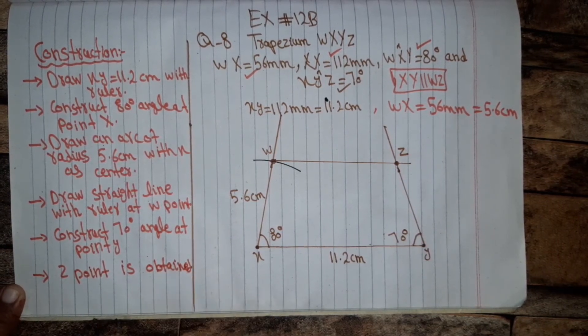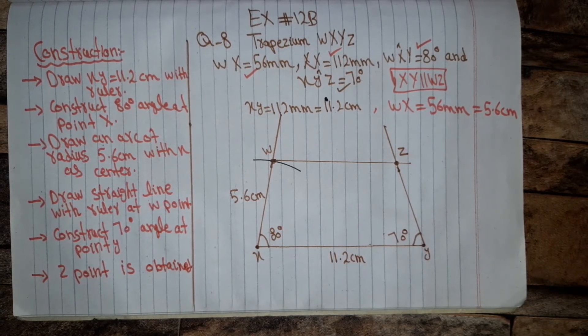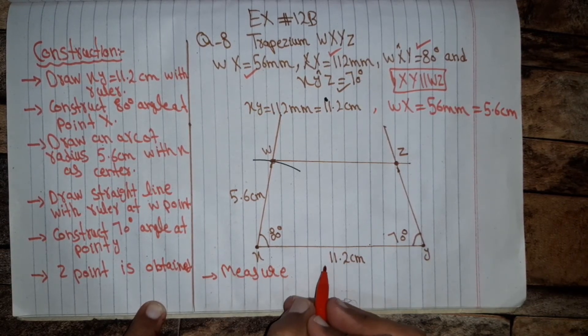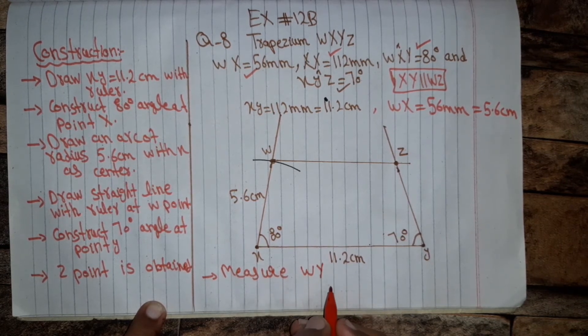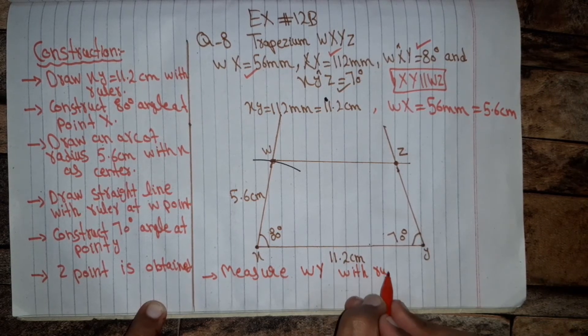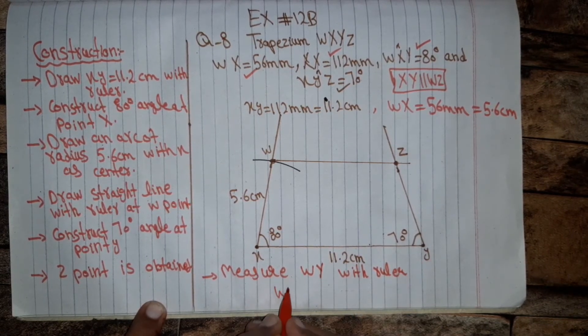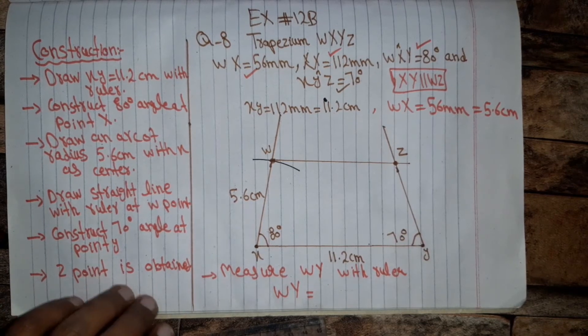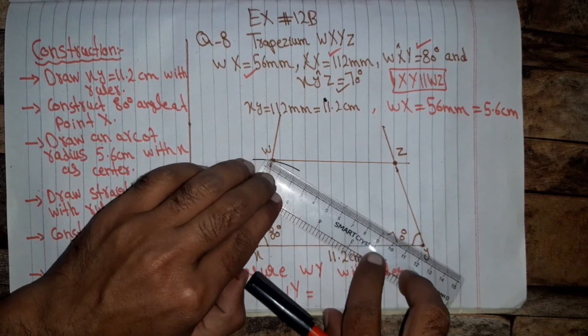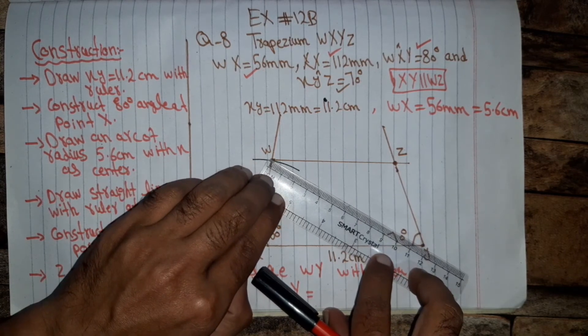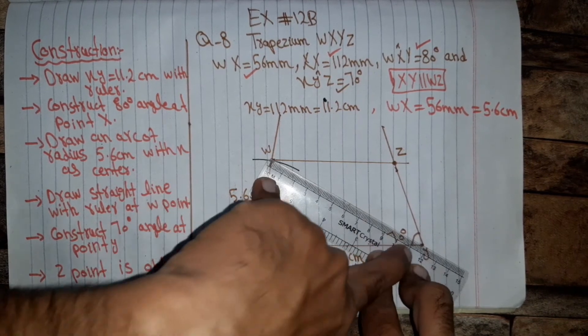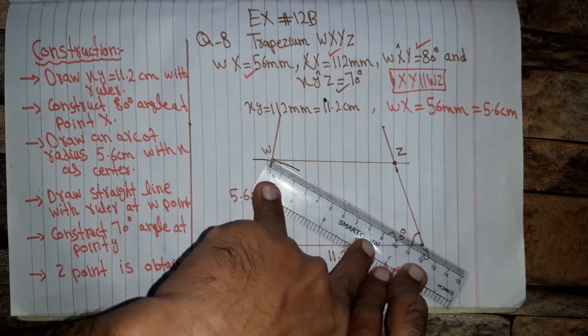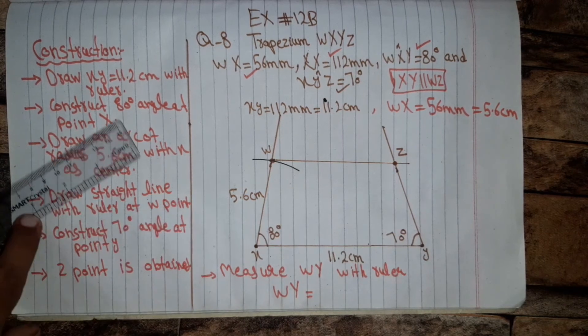We have to measure, measure WY with rulers. WY equal, we will measure WY with the scale. So this is eleven point seven, yes eleven point seven centimeters. So I hope you can see clearly this is eleven point seven centimeters.